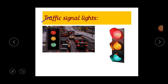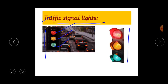Traffic signal lights. So children, you might have seen these traffic signal lights. Generally, we find them in the circles where roads meet. So this is called the traffic signal lights. Here you can see it is having three colors — red, yellow and green. These lights give specific instructions to the movement of vehicles. So while you are driving, you should be very careful. You should have your attention towards the traffic signal lights.